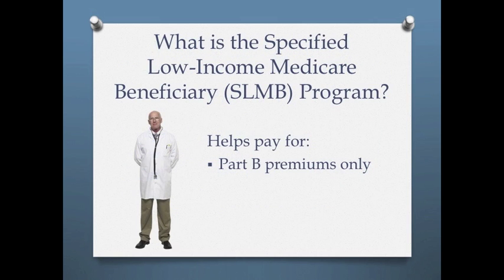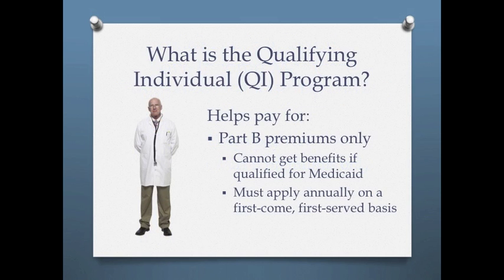The Specified Low Income Medicare Beneficiary program, or SLMB, only helps pay for Part B premiums. Like SLMB, the Qualifying Individual program, or QI, only helps pay for Part B premiums, but it has a higher income limit.